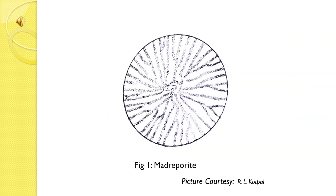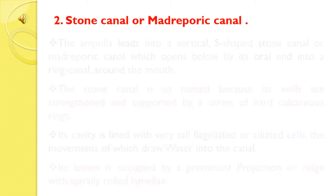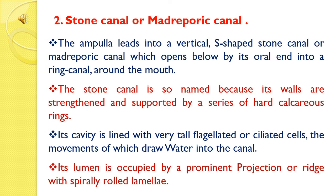This is the picture of the madreporite. Now, the second part is the stone canal. The ampulla leads into a vertical stone canal, or madreporic canal, which opens below by its oral end into a ring canal around the mouth. The stone canal is so named because its walls are strengthened and supported by a series of hard, calcareous rings.